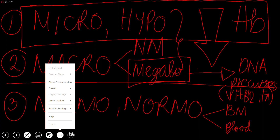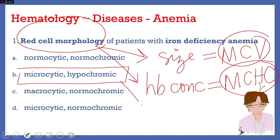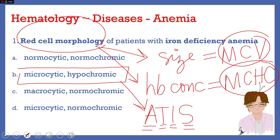The microcytic hypochromic anemias may be remembered by using the mnemonic ATIS, which stands for: Anemia of chronic disease, Thalassemia, Iron deficiency anemia, and Sideroblastic anemia.